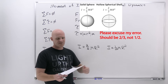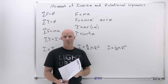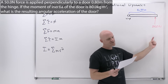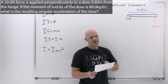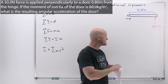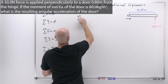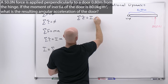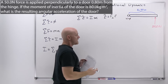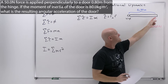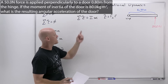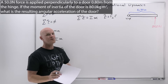The next question is a calculation: a 50.0 Newton force is applied perpendicularly to a door 0.80 meters from the hinge. If the moment of inertia of the door is 80.0 kilogram·meter², what is the resulting angular acceleration of the door? We use the rotational equivalent of Newton's second law: sum of torques = I·alpha. Torque equals the perpendicular component of force times the lever arm. Our entire force is perpendicular, the lever arm distance is given, and the moment of inertia is provided, so we can calculate alpha.